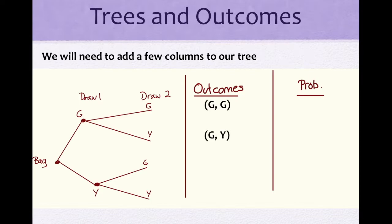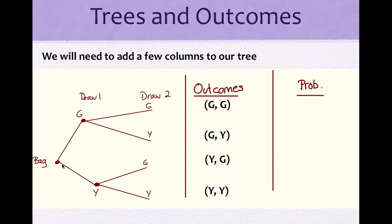To write the outcomes, you just need to follow your tree. Starting from the bag, the first outcome is drawing a green and then another green, so G and G. The second outcome is drawing a green and then a yellow, so G, Y. Down here, you could pick a yellow first and then green, or yellow first and yellow. You should write them all out this way.